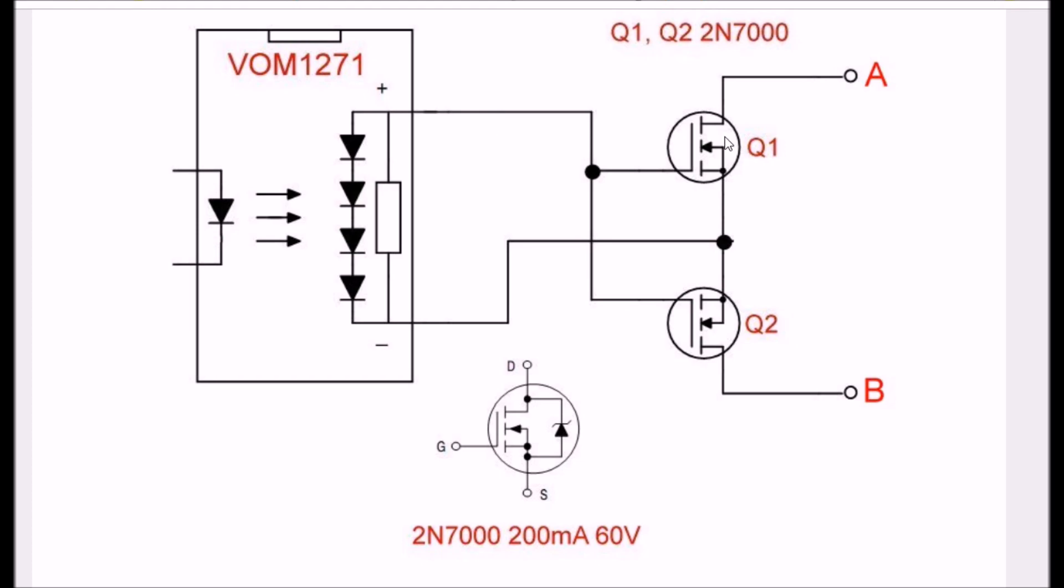And if you look at the two MOSFETs here, here's gate-to-gate over-to-positive. Here is source-to-source over-to-negative. And you take the output from drain-to-drain.